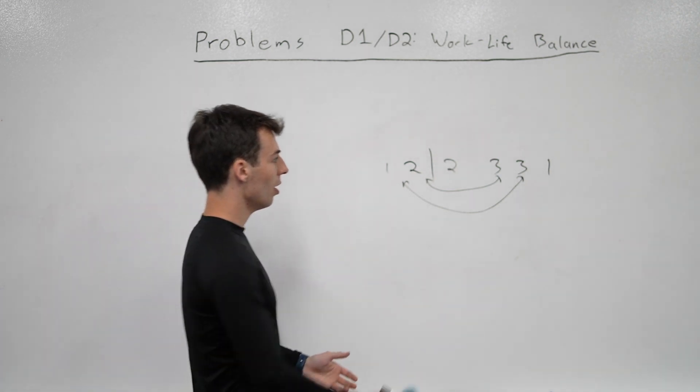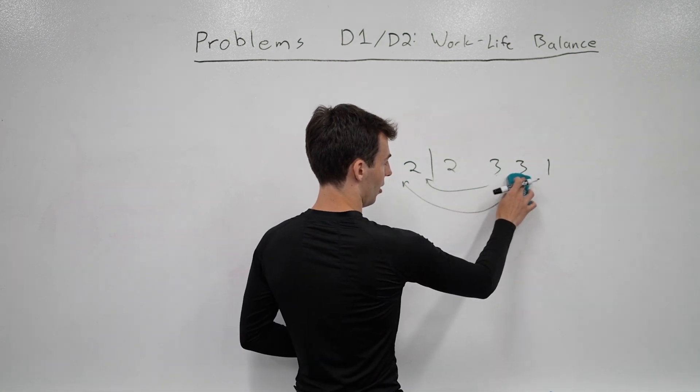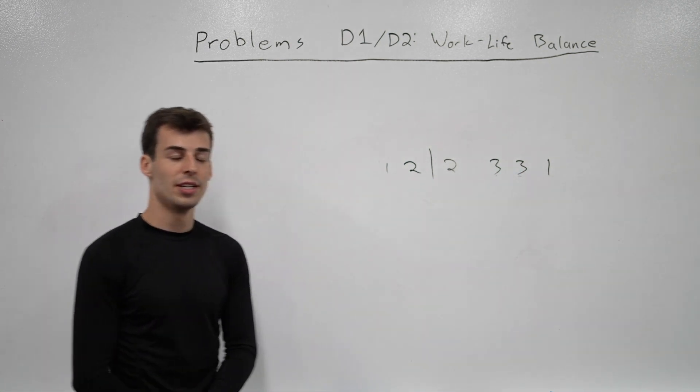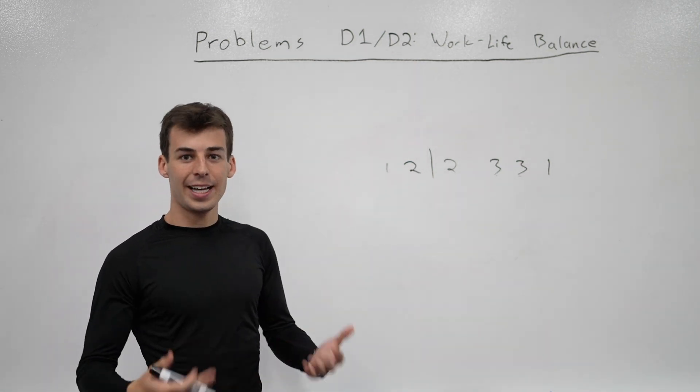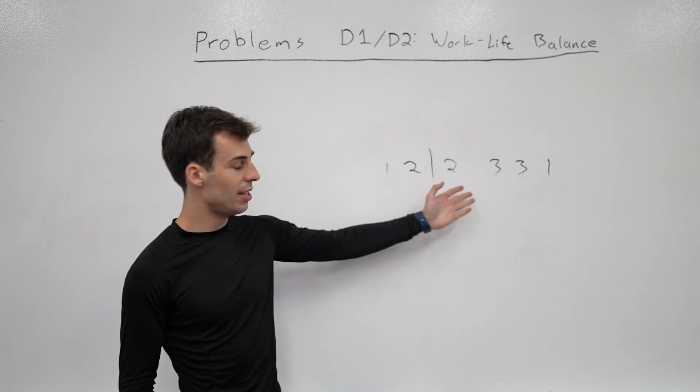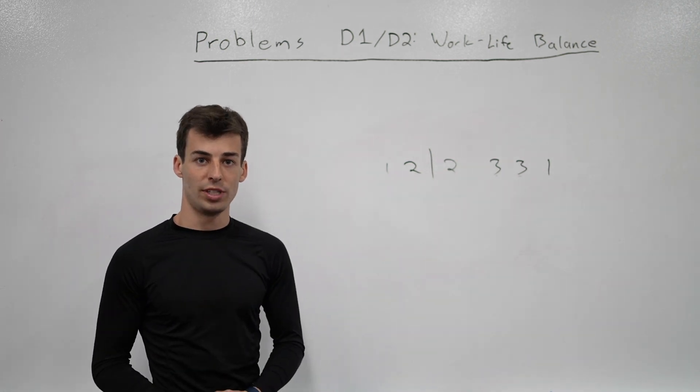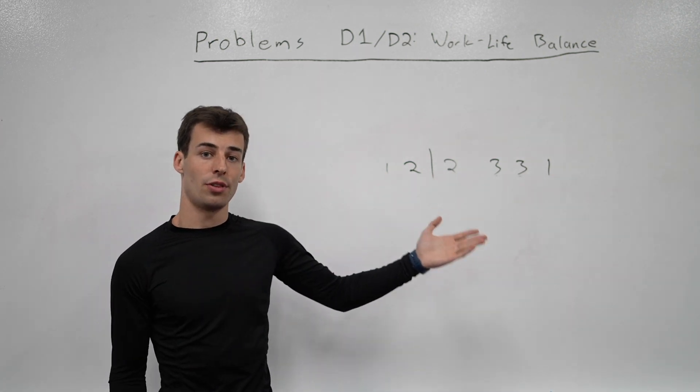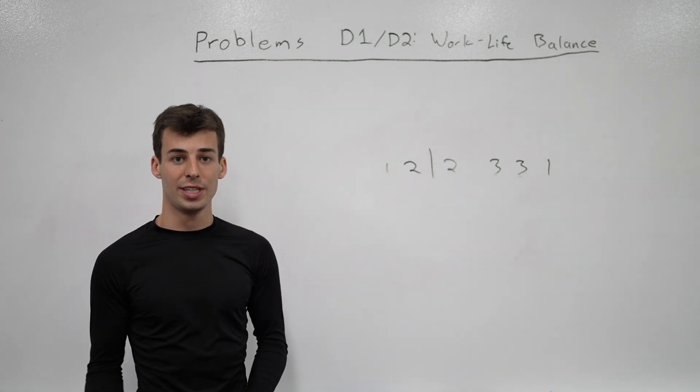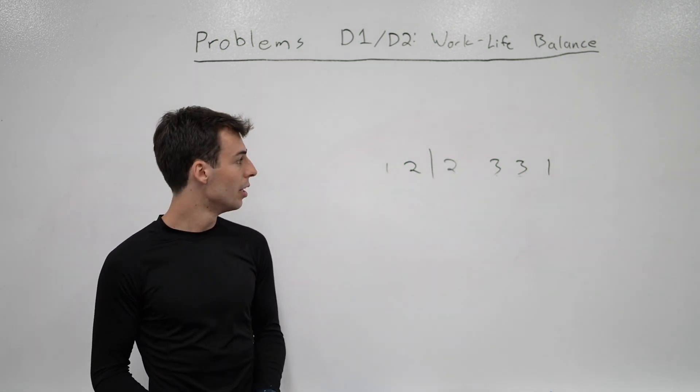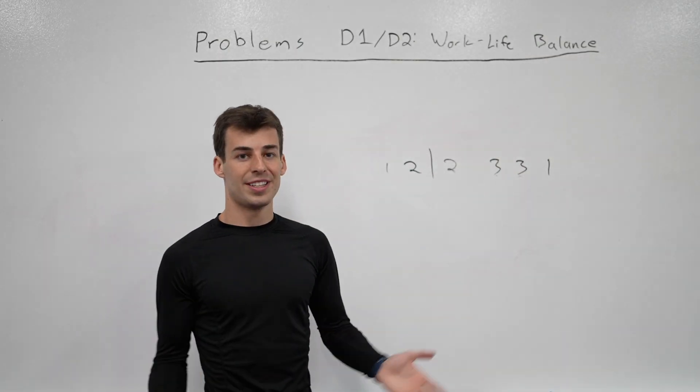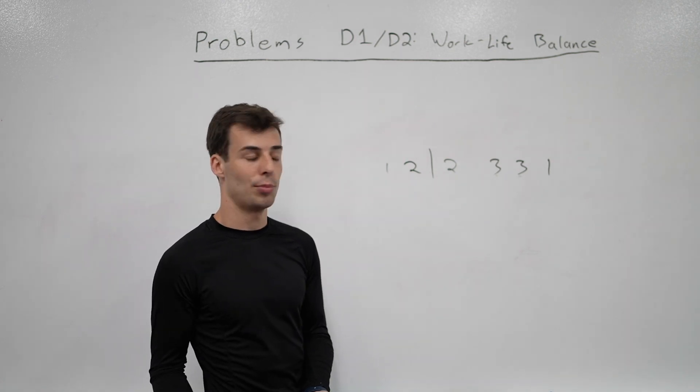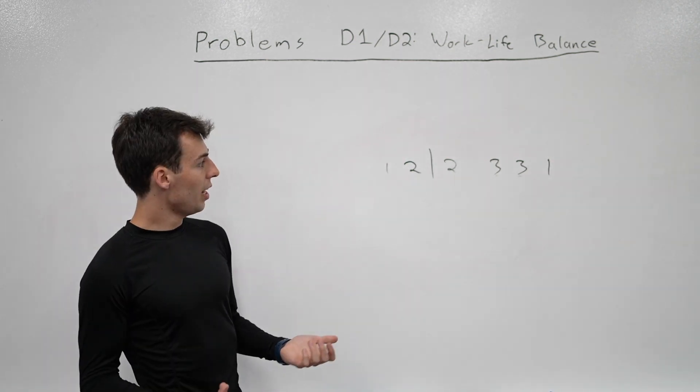So how do we actually solve this problem? Well, it turns out that we don't really care too much about the order of the array. We only really care about what kinds of things are on the left side and the right side of whatever split point we're given. So if we know how many 1s, 2s, and 3s are on the left, and how many 1s, 2s, and 3s are on the right, that's all the information we need in order to solve the problem.